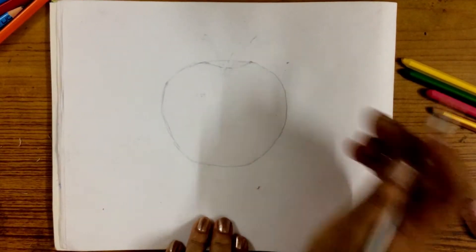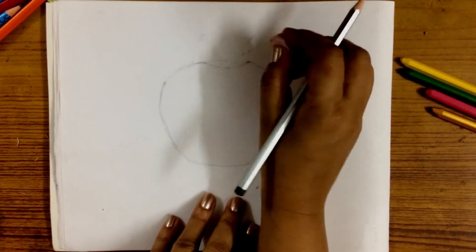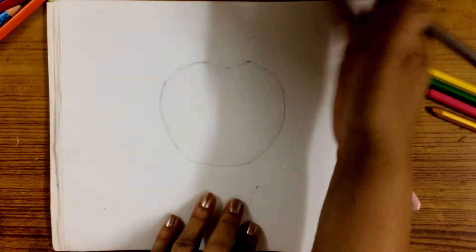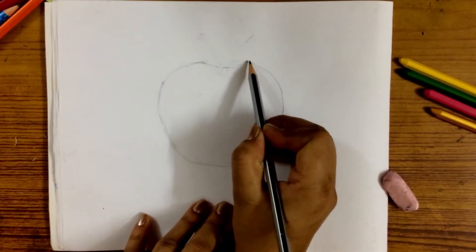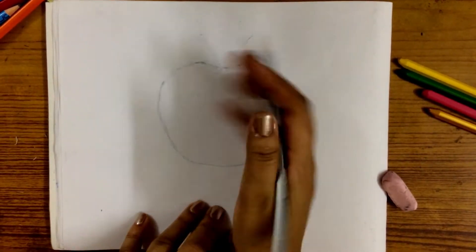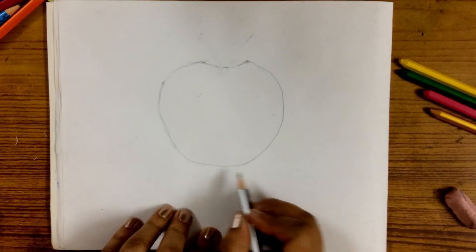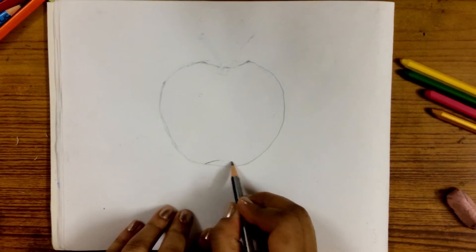And we will rub off the line, this extra line. Now we will draw a curve at the bottom.